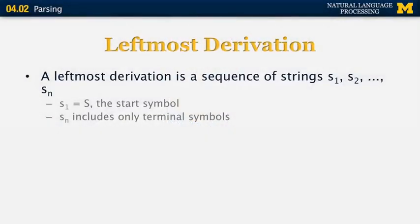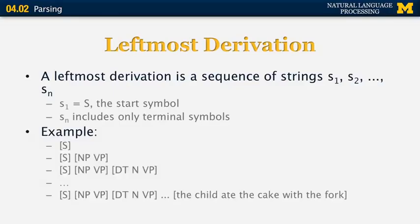Let's discuss the idea of a leftmost derivation. Given a grammar and a sentence, there is a unique way to parse the sentence by always expanding the leftmost unexpanded non-terminal. The leftmost derivation is a sequence of strings S1, S2, all the way to Sn, where S1 is the start symbol — for sentences that would be S — and Sn only includes terminal symbols or words. Starting with S, we replace it with NP VP by applying the rule S → NP VP, then replace the leftmost unexpanded symbol and so on, until we get 'the child ate the cake with a fork' where everything is terminal.